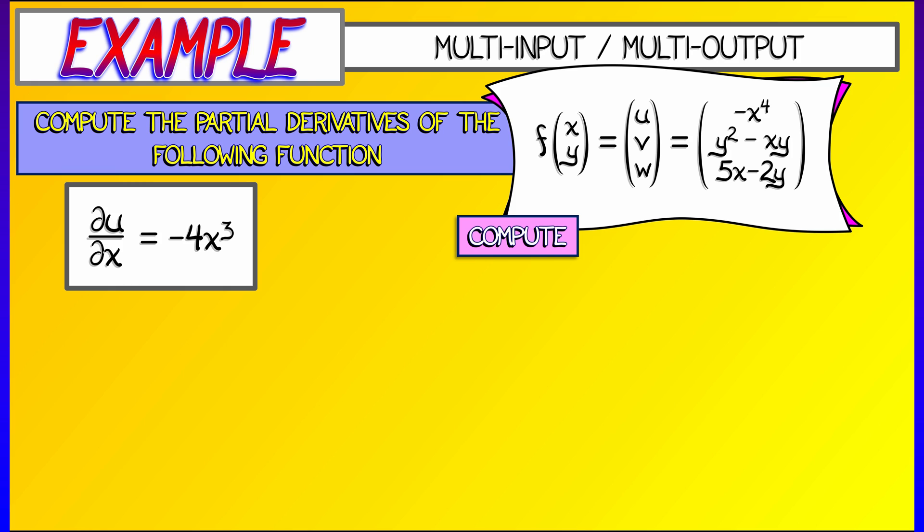u doesn't even have any y's in it, so that partial derivative is really simple. Oh, but we also need to compute the partial of u with respect to y, the second input.